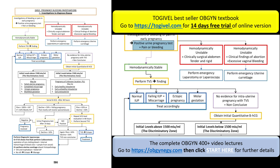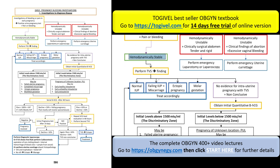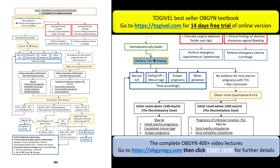If the patient is hemodynamically stable, you perform a TVS — transvaginal sonography. According to the transvaginal sonography, either this is a normal intrauterine pregnancy — as discussed in the obstetric ultrasound chapter — or this is a failing intrauterine pregnancy, which is a miscarriage, also discussed previously.